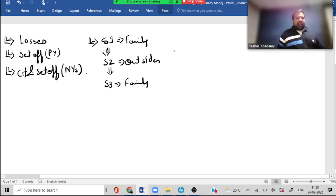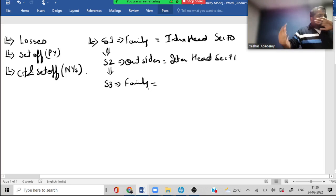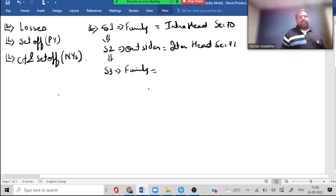In terms of tax, this is called intra head, within the same head, and this is under section 70. This is called inter head, one head with the other subject to some restrictions. This is section 71, and these are carry forwards which are multiple sections. Let's start with section or step one.